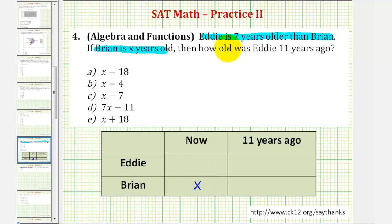And because Eddie is seven years older than Brian, and again Brian is x years old, we'd have to add seven to find Eddie's age. So Eddie's age right now would be x plus seven.